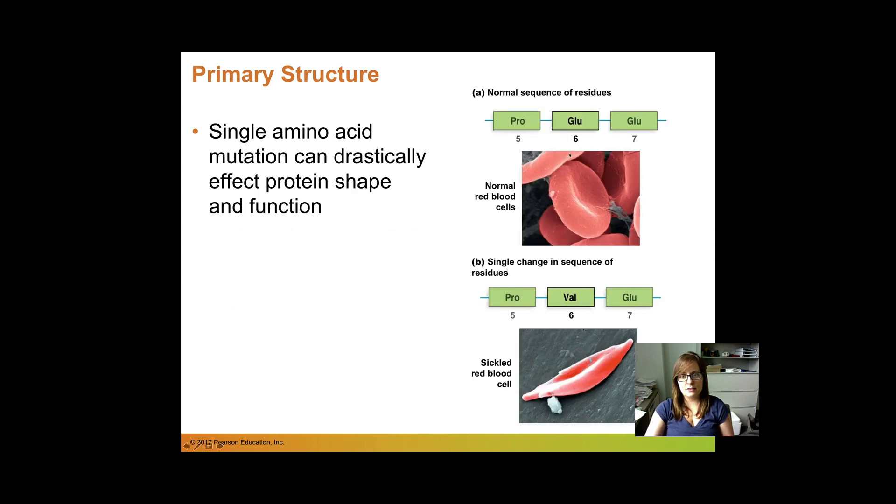For example, if you take the mutation that causes sickle cell, here you have glutamate and it's mutated to valine. This protein will change, this hemoglobin will change in such a way that we go from having a normal red blood cell that can carry oxygen to having the sickle cell red blood cell that is very poor at carrying oxygen. So just this single amino acid mutation can drastically alter the shape and function of a protein.